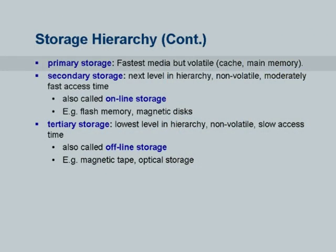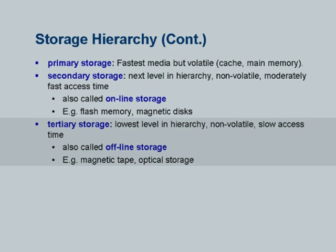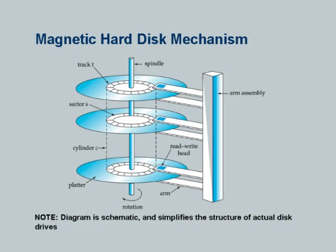These levels are called primary — cache and main memory — secondary, which basically concerns us: flash and magnetic disk, and then tertiary, which used to be magnetic tape and optical storage. Some people say that for a lot of databases, flash is going to become secondary and disks are going to become tertiary storage in the few years to come. Although disks may become tertiary in a few years, for the moment we still have to live with disks for any substantially large amounts of data.